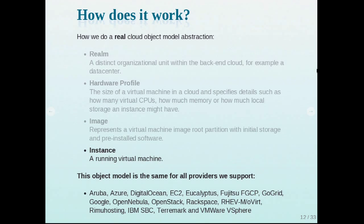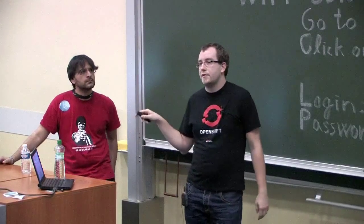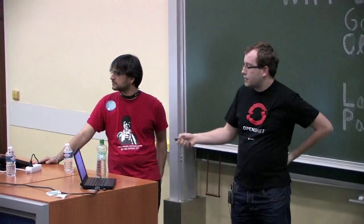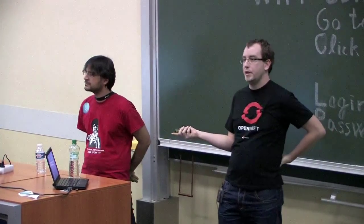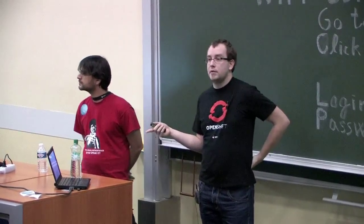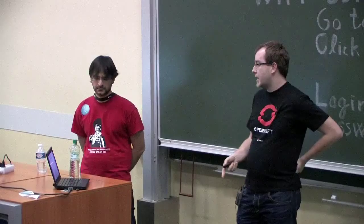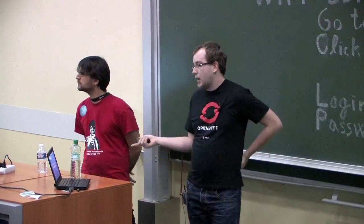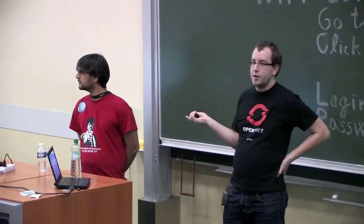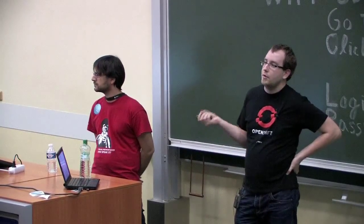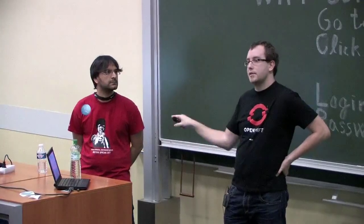Then you have the instance, which is the running virtual machine. You can manage instances — turn them off, create new ones, reboot them, all lifecycle operations. This object model applies to all drivers we currently have. We support Aruba Cloud (an Italian cloud provider), Azure (storage part only), DigitalOcean (a new cloud with SSD storage at a great price), EC2, Amazon, Eucalyptus, Fujitsu's own driver, GoGrid, Google (storage support), OpenNebula, OpenStack, Rackspace, RHEV, and others — all work through the same five-model interface.